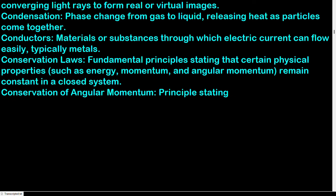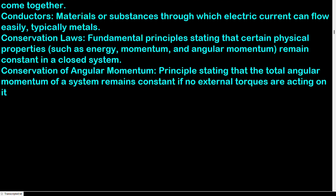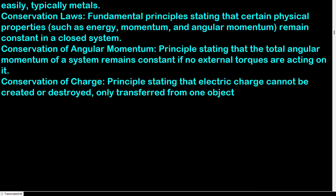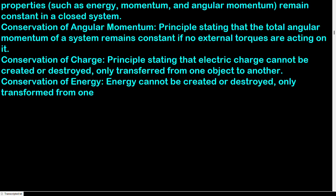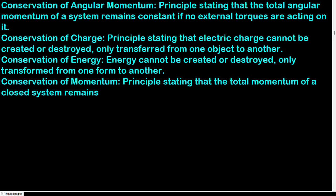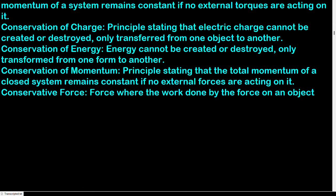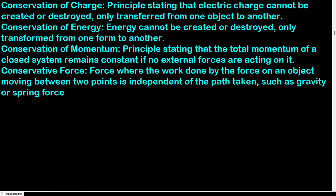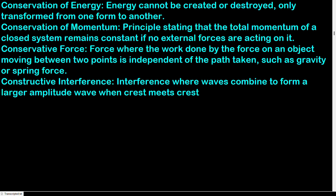Conservation laws: fundamental principles stating that certain physical properties — such as energy, momentum, and angular momentum — remain constant in a closed system. Conservation of angular momentum: the total angular momentum of a system remains constant if no external torques act on it. Conservation of charge: electric charge cannot be created or destroyed, only transferred. Conservation of energy: energy cannot be created or destroyed, only transformed. Conservation of momentum: the total momentum of a closed system remains constant if no external forces act on it. Conservative force: force where work done is independent of the path taken, such as gravity. Constructive interference: waves combine to form a larger amplitude wave when crest meets crest.